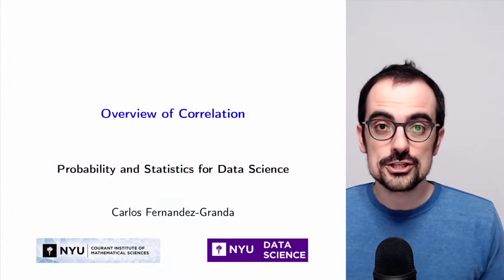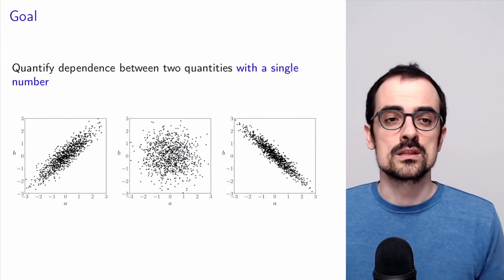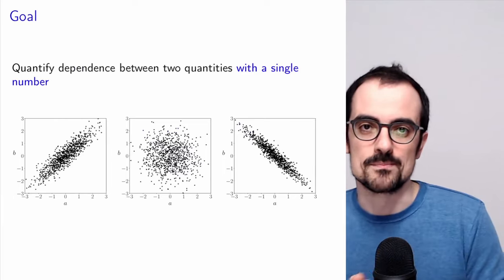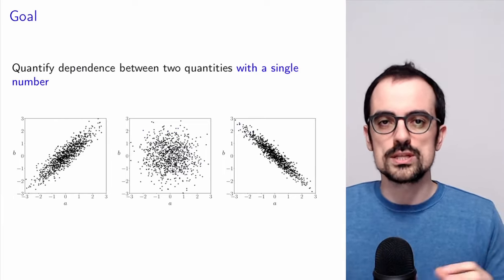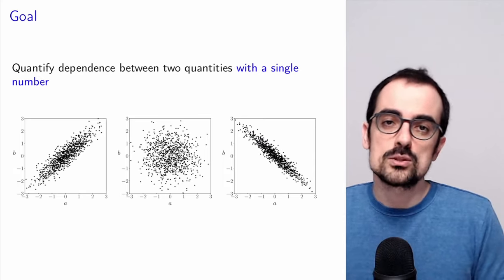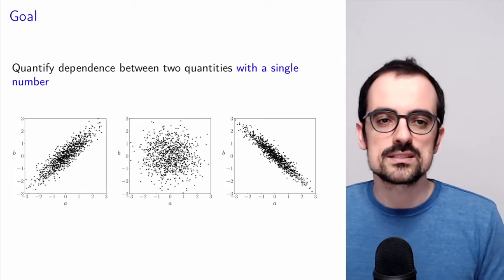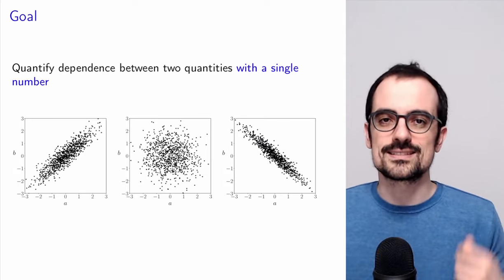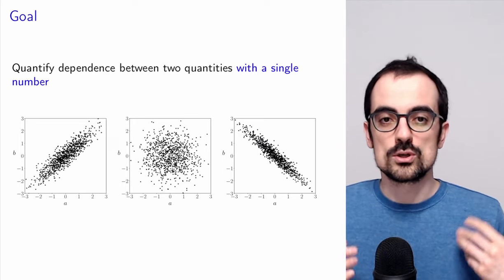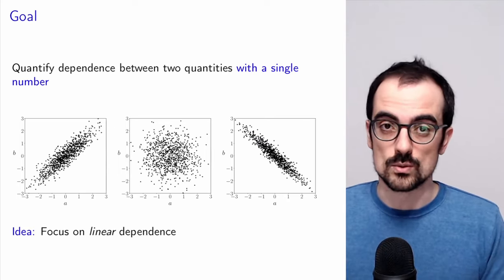Why do we talk about correlation to begin with? We want to quantify the dependence between two quantities with a single number. We know how to quantify dependence using the joint distribution — joint PDF or joint PMF — but those objects can be complicated to work with and difficult to estimate from data. So we want a single number that summarizes the relationship. To achieve that, we focus on linear dependence between the quantities.